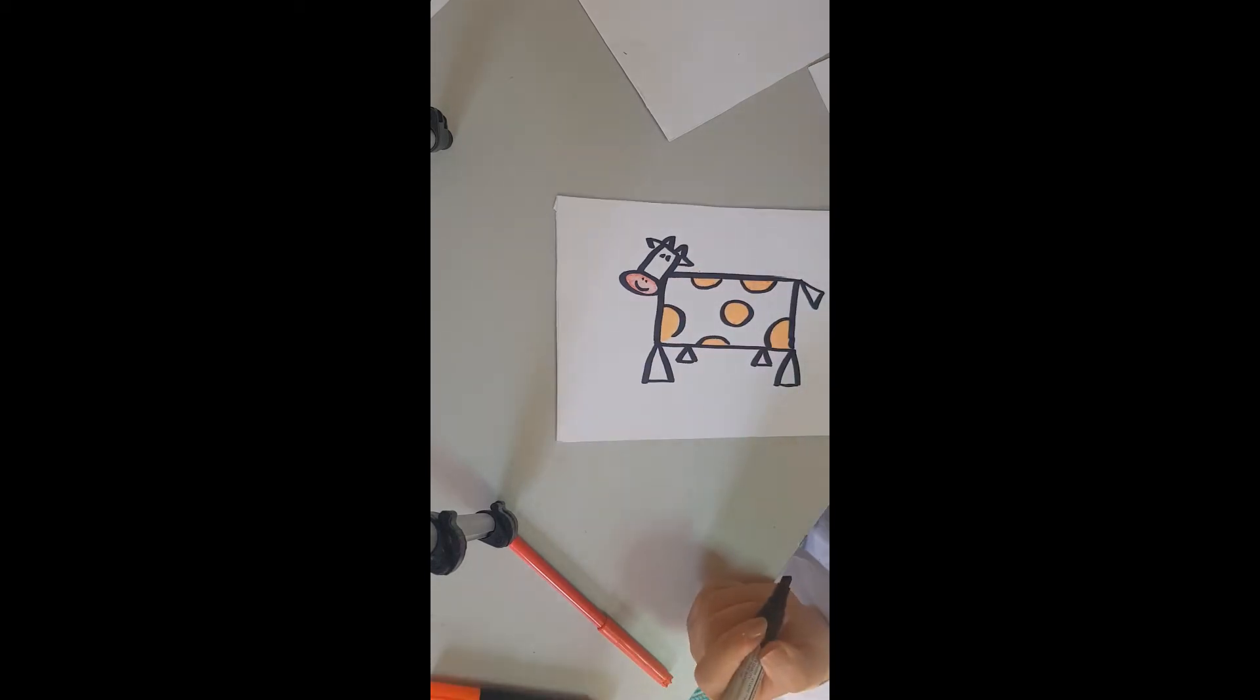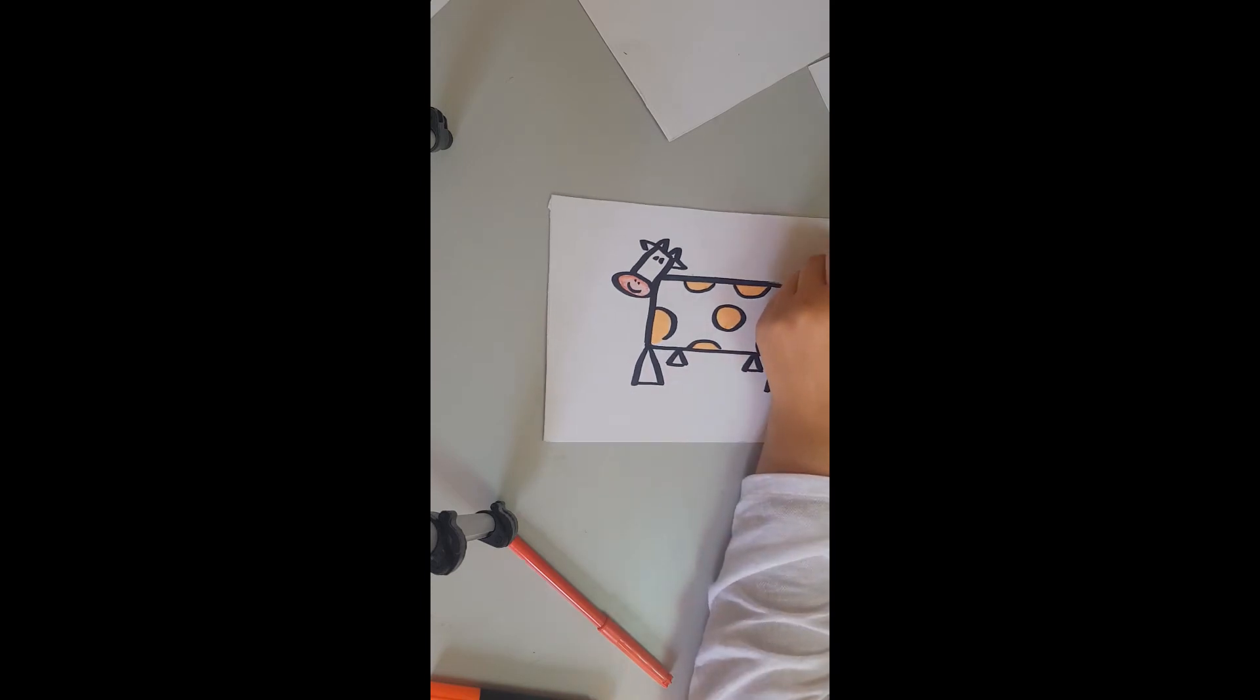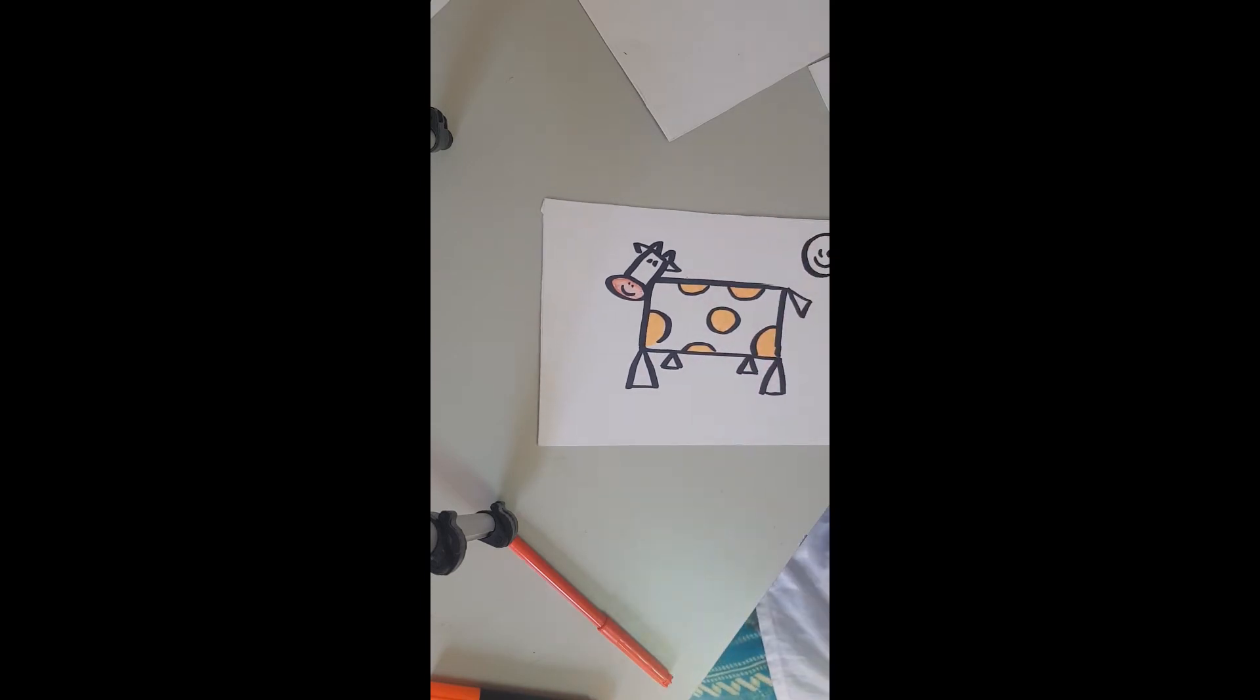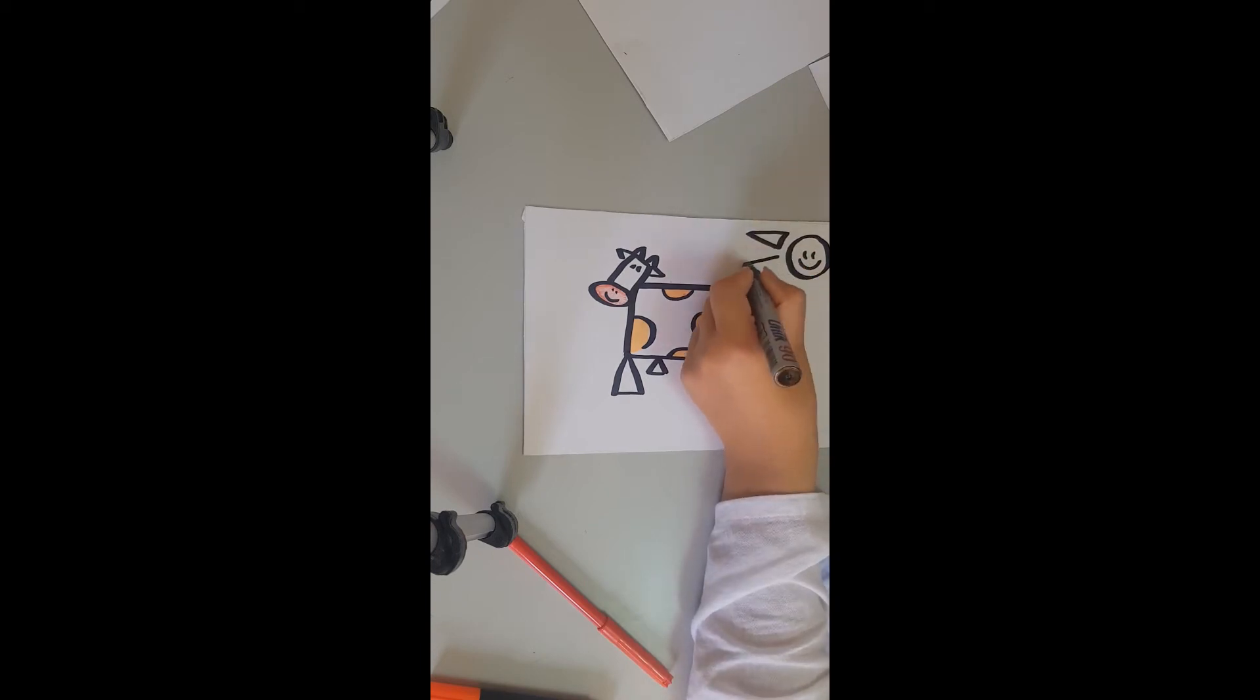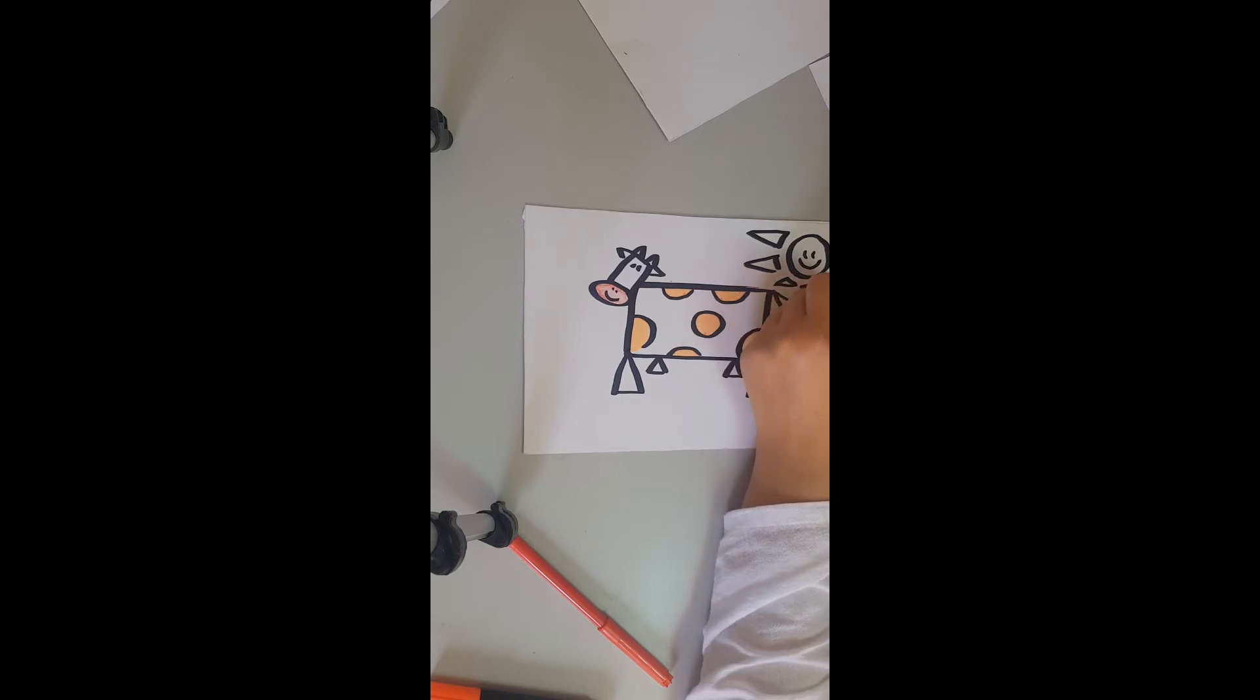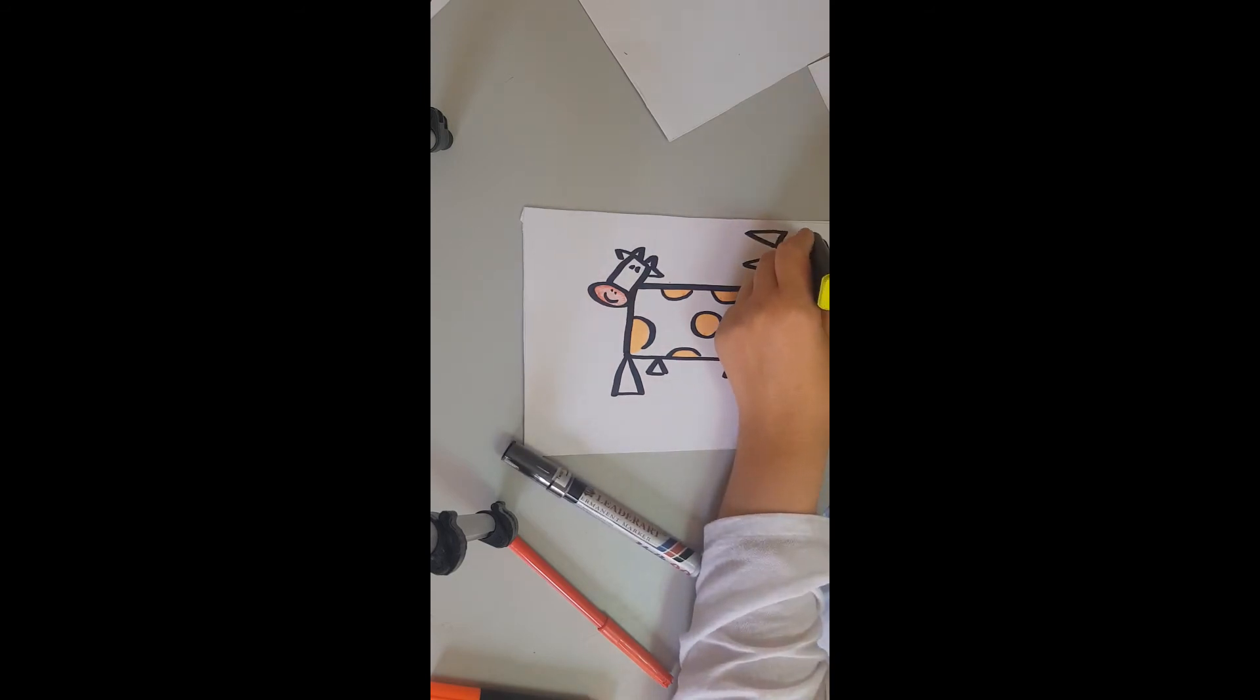What about adding a sun? So, a smiley little sun. Using triangles, we're going to add some sun rays. Color the sun, yes, in yellow.